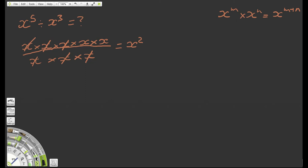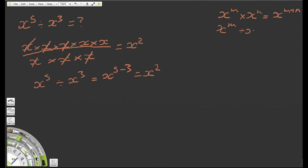So x to the fifth divided by x to the third simply becomes x squared or x to the 2. Looking at the 5, 3, and 2, we can see the relationship clearly — x to the fifth divided by x to the third equals x to the fifth minus the third, which is x to the 2. So our second rule is: x to the m divided by x to the n is equal to x to the m minus n.